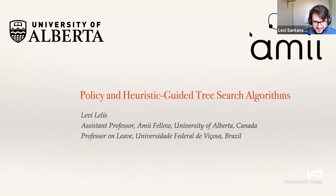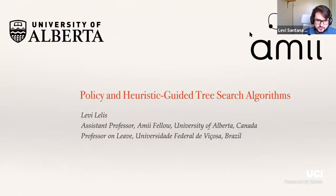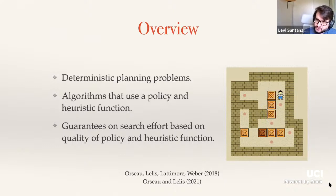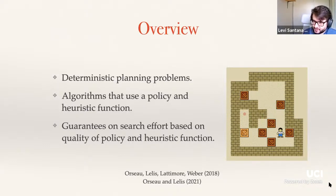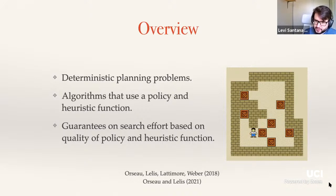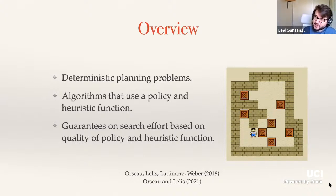We're very used to using heuristics like we do with A* and more classic algorithms. We have this family of recent algorithms that use a policy to guide the search. We're going to be dealing with deterministic planning problems. On the right-hand side is a Sokoban problem — a classic deterministic planning problem where you have this little man you move around to push boxes to their goal locations. We're trying to find a plan: the sequence of actions the agent has to take. I'll tell you about algorithms that use a policy and algorithms that use both a policy and a heuristic function.